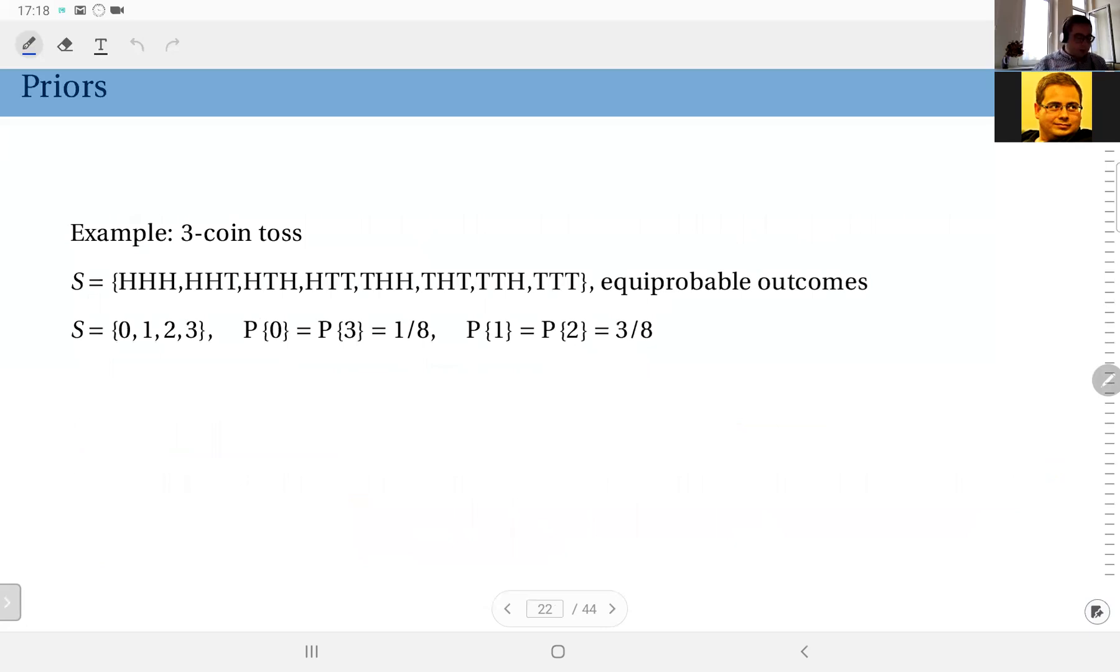Simple example here. Let's assume the random experiment is a three coin toss. So this could be like tossing three different coins simultaneously, or one by one, or using the same coin. And of course, we will assume the coin is fair. And we can define the sample space in this form.